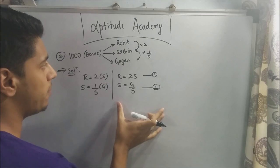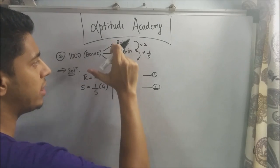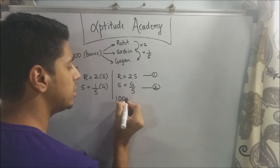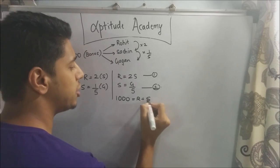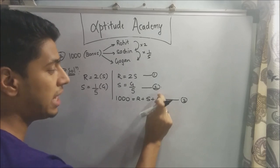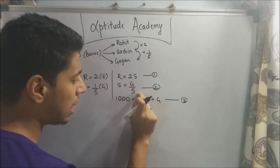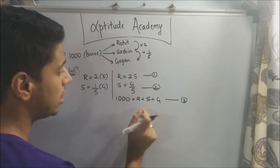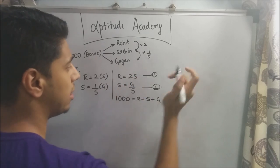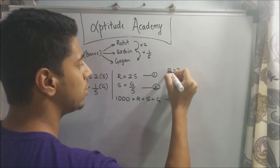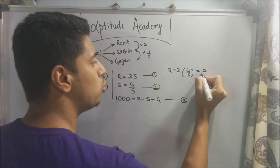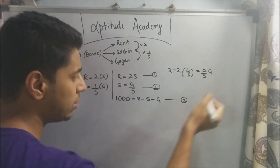The third equation is the obvious one: if you add up all three shares, you get 1,000 rupees — so r + s + g = 1,000 (equation three). They've asked for Gagan's amount, so we'll express r and s in terms of g. We know s = g/5, and substituting into r = 2s gives r = 2g/5.